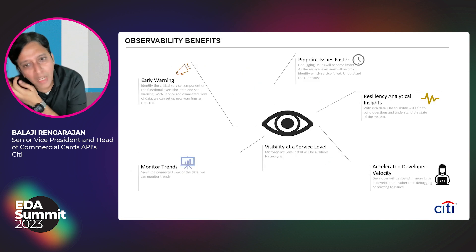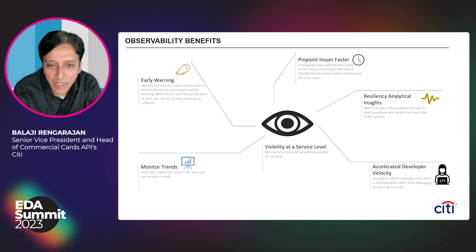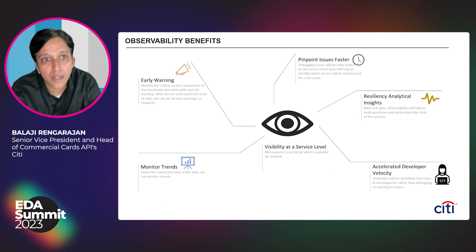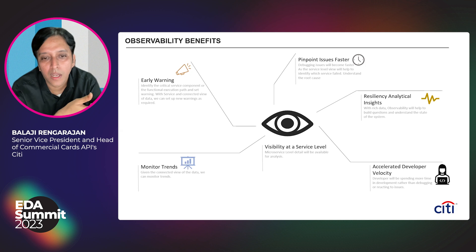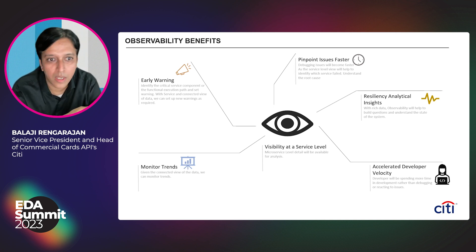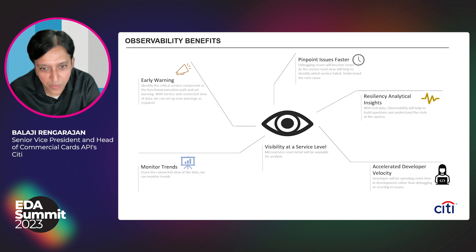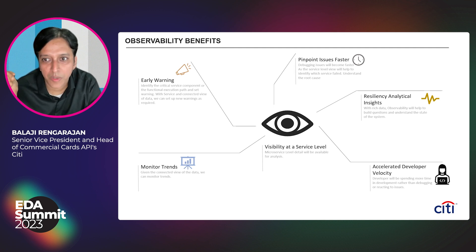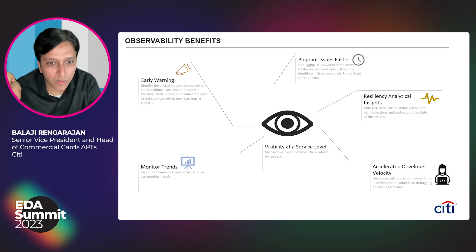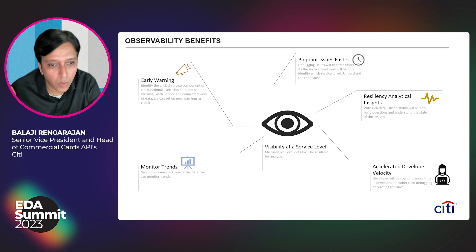Some high-level benefits we have observed from implementing observability: First, service-level visibility gives greater detail per microservice. Second, we can build an early warning system — if a particular service fails, we can alert on it with proactive capabilities. Third, from a developer point of view, pinpointing an issue at the service level compared to the API level is much faster. We can also derive analytical insights in terms of the state of the system and infrastructure resiliency. Overall, developers are much more productive by looking at service-level data rather than spending time debugging issues.